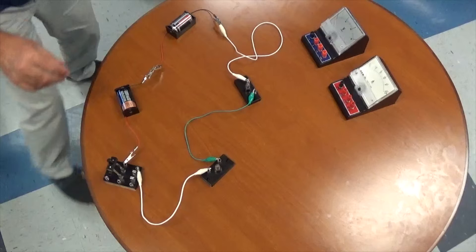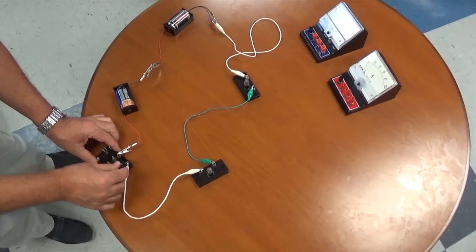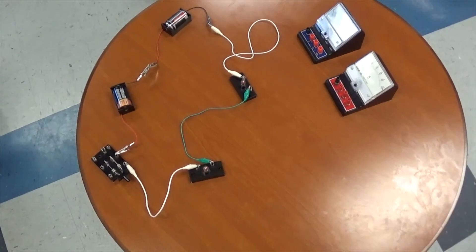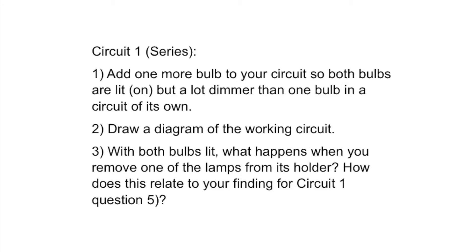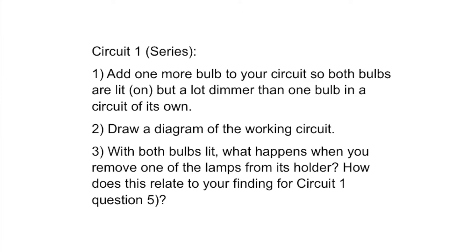Now you can flip the switch, turn off the lights, and see how the lights act. For question two, pause the video and draw out the circuit you have just created using proper physics symbols. Question three: what happens if one of the lamps is removed? The first light becomes brighter. This is due to the light being unaffected by another potential difference supplied by a resistor — the first light source is being affected by 100% of the electric potential from the battery.